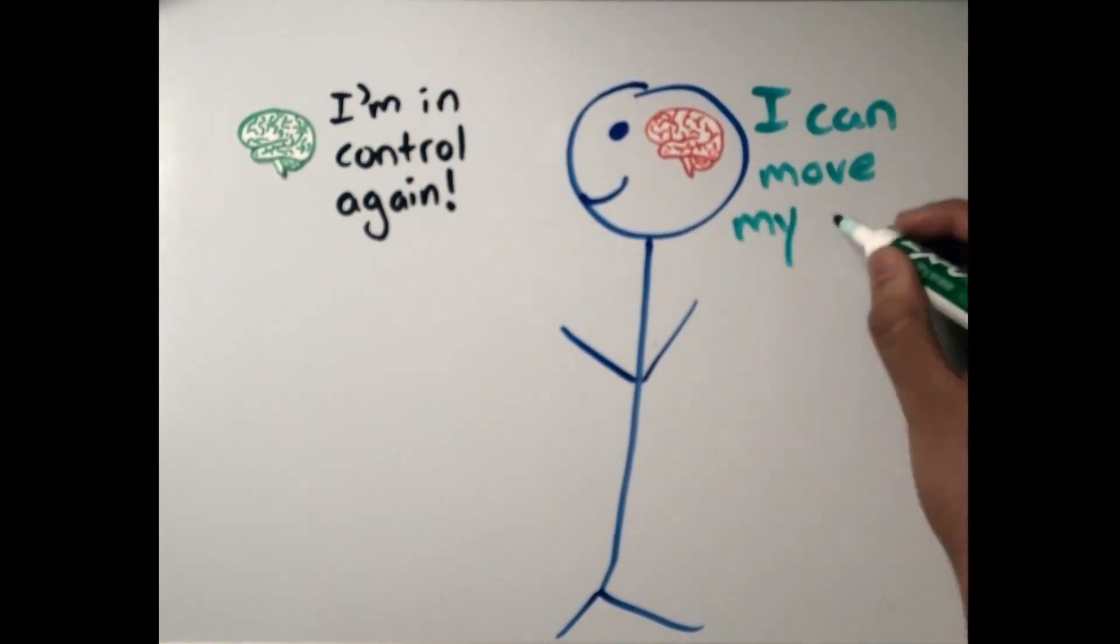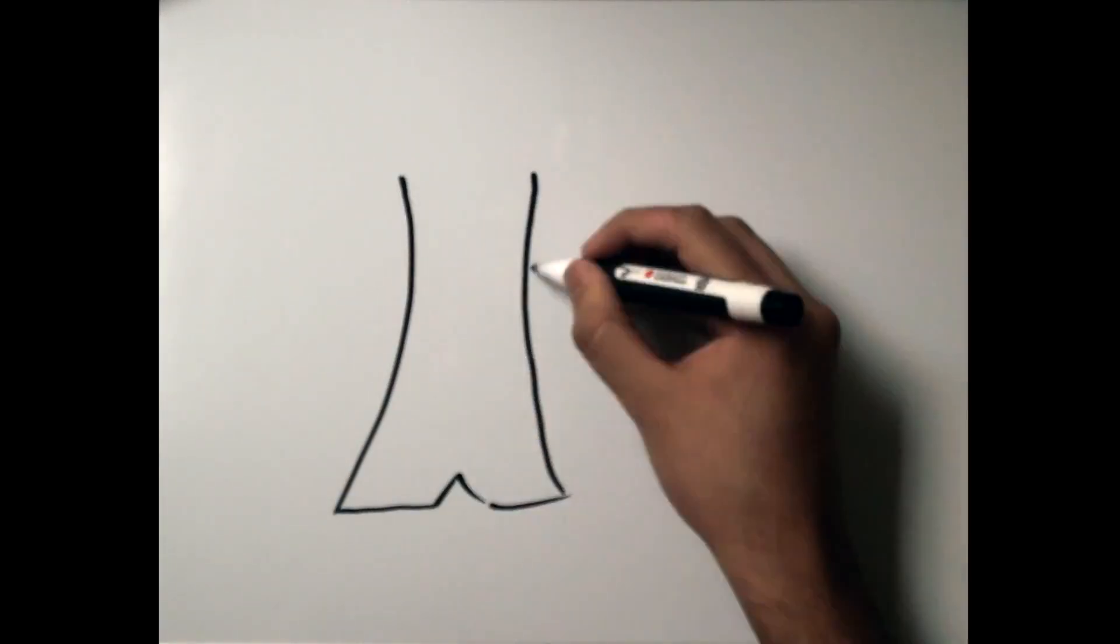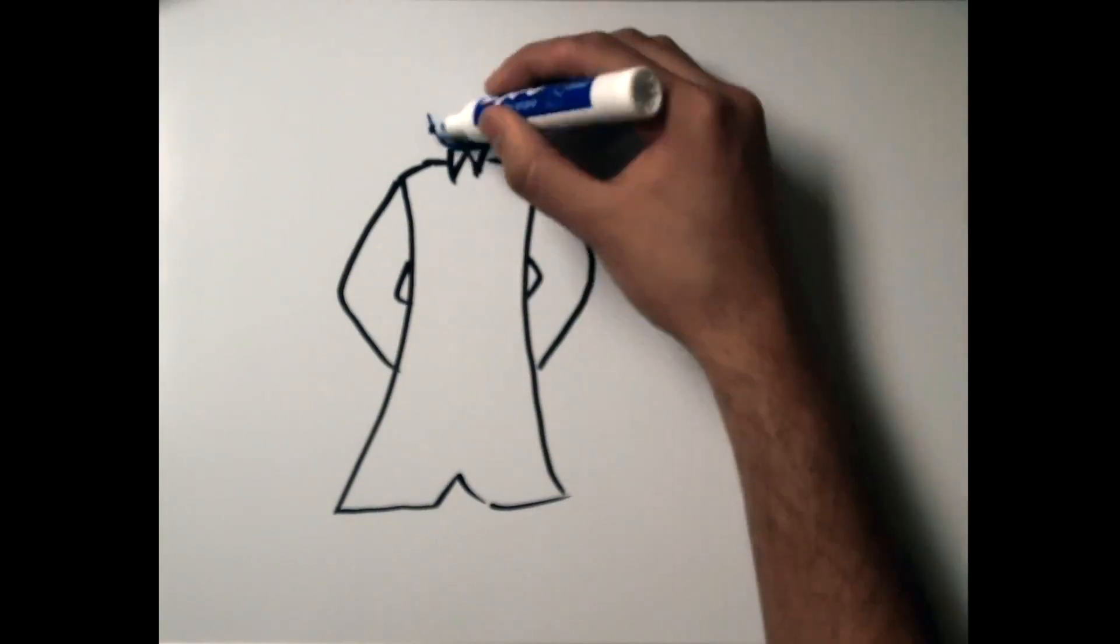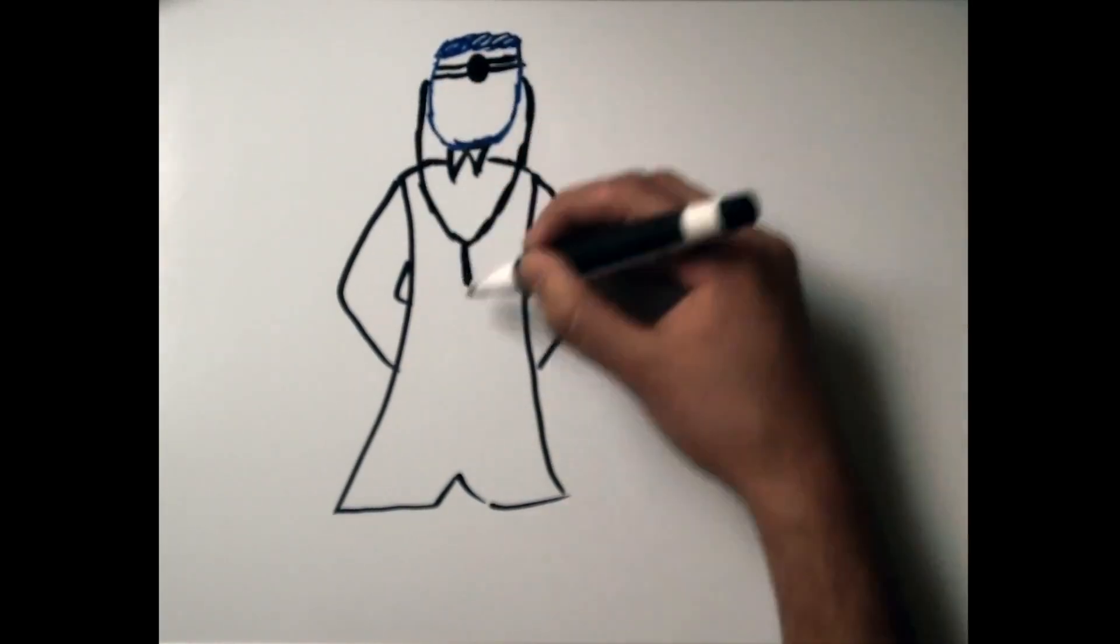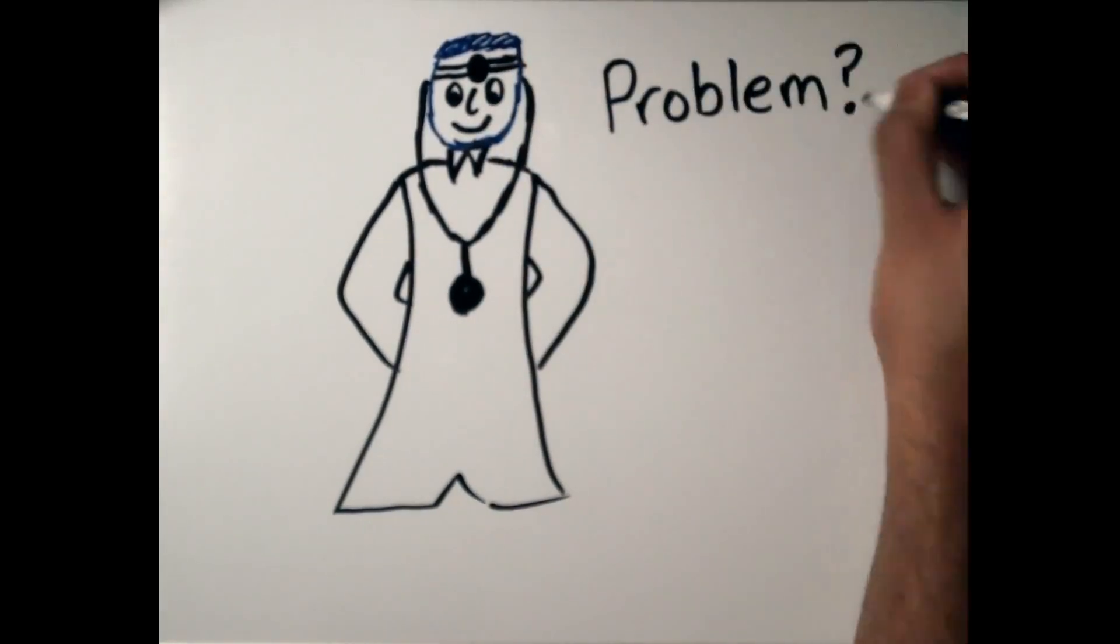Motor neurons generally regain functionality before those that transmit pain and temperature. Therefore, you can regain control of the limb before the tingling is completely gone. While it's generally harmless, having frequent repetitive paresthesia could be a sign of an underlying health issue, and you should probably see your doctor about that.